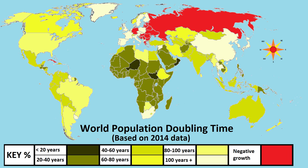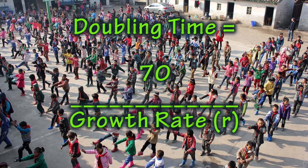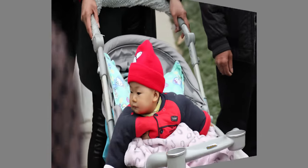One way we measure population growth is by calculating the doubling time. This is the length of time it takes for a population to double in size. It is calculated by dividing 70 by the growth rate.